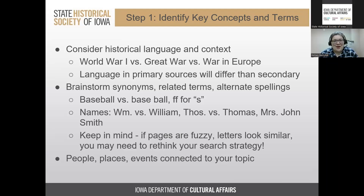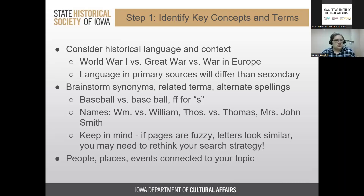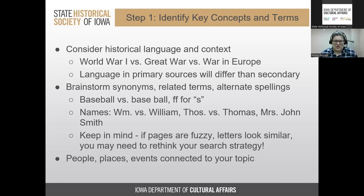Brainstorm synonyms, related terms, and alternate spellings. For instance, 'baseball' used to be two words, and 'court house' was separate from 'courthouse.' In early printing, what looks like 'ff' is actually an 's,' which digitization platforms might not catch. For names, they were often abbreviated — 'WM' for William, 'THOS' for Thomas — and women were often listed as 'Mrs. John Smith' rather than by their own first name. Make sure you have different ideas of how things could be spelled.